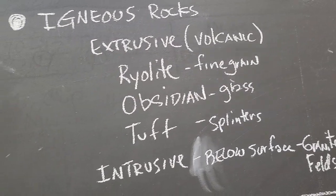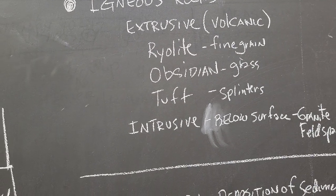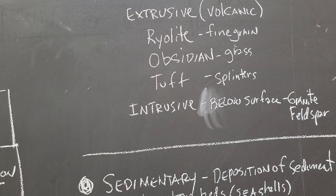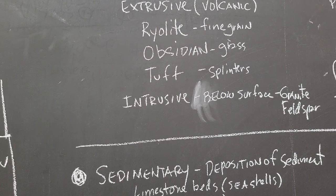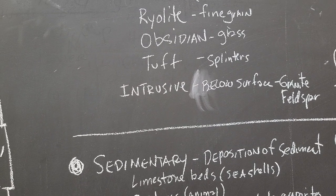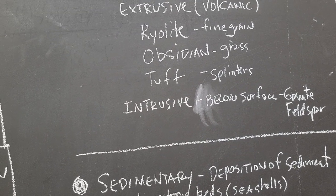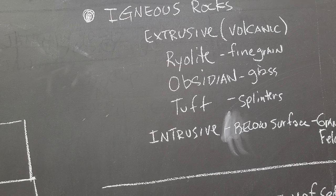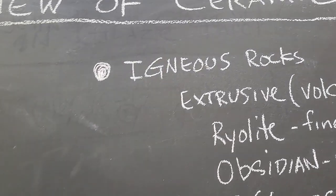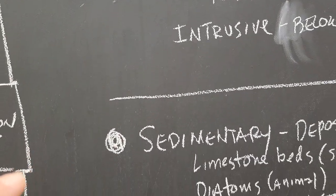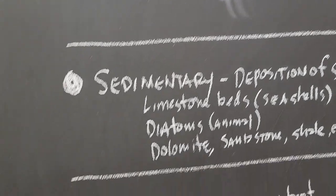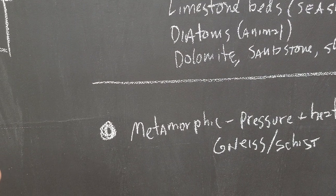As far as geology goes — and geologists will be saddened by how basic this is — there are three types of rocks: igneous rocks, sedimentary rocks, and metamorphic rocks.